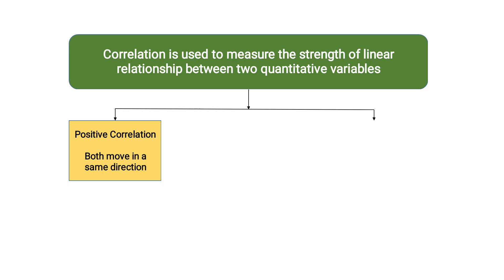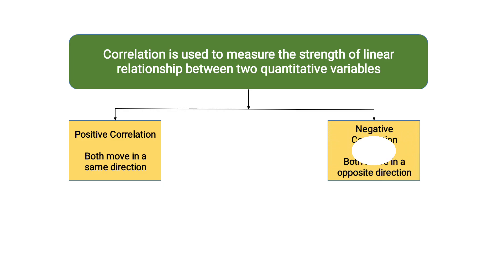We can broadly divide correlation into two types. Positive correlation is when both variables move in the same direction — if one variable increases, the other variable also increases. In negative correlation, both move in opposite directions — if one variable increases, the other variable decreases.